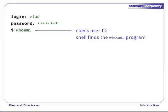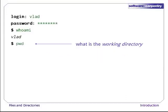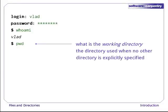When we enter it, the shell finds a program called whoami, runs it, displays its output, and then displays a new prompt, telling us that it's ready for more commands. Now that we know who we are, we can find out where we are using pwd, which stands for Print Working Directory. This is our current default directory, i.e., the directory the computer assumes we want to use unless we specify something else explicitly.